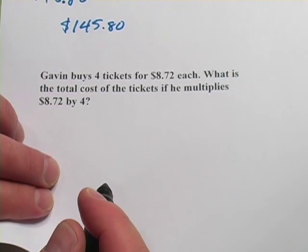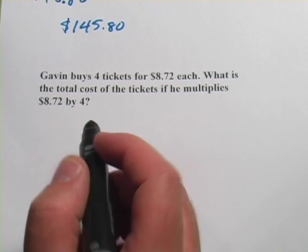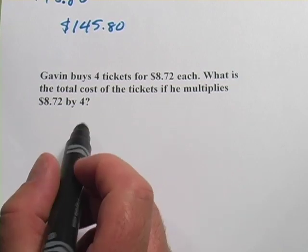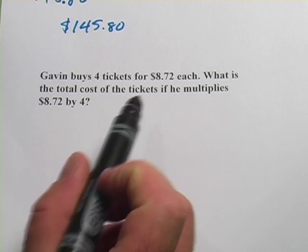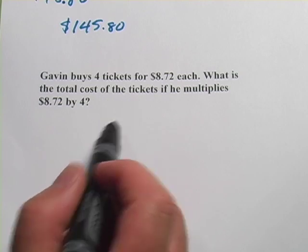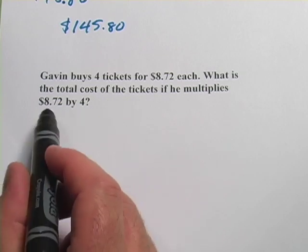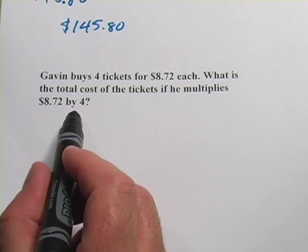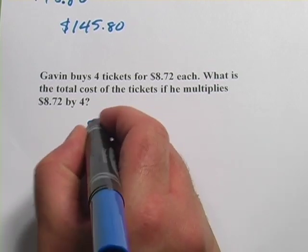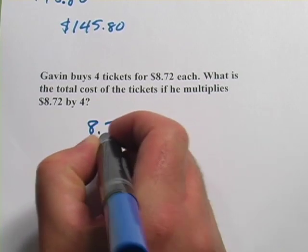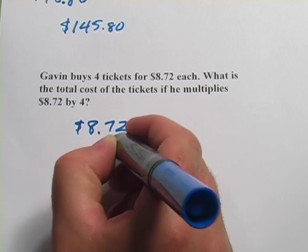Let's look at the last one. This is a word problem involving multiplication. It says Gavin buys 4 tickets for $8.72 each. What is the total cost of the tickets if he multiplies 8.72 by 4? So let's set that up. We're multiplying $8.72 times 4.